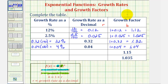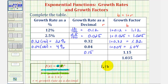Now for the last two examples, we're given the growth factor and need to find the growth rate as a decimal and then as a percentage. Remember, the growth factor b is equal to 1 plus r. We should recognize that if b is equal to 1.15, then r would have to be 0.15. If we don't recognize this, we could set up the equation: 1.15 equals 1 plus r, and subtracting 1 from both sides gives us r equals 0.15.